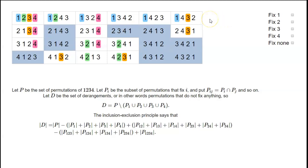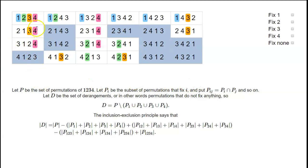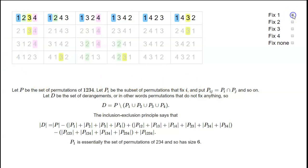We can do this using the inclusion-exclusion principle. We're going to let P_i be the subset of permutations that fix the number i. So P1 is the permutations that send 1 to itself — those are the ones across the top here.